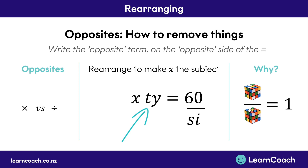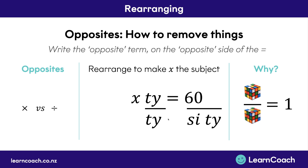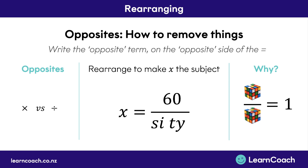The exact same thing holds true for TY. X is times TY on the left-hand side, so we put divided by TY — the opposite term — on the opposite side of the equals sign, on the right-hand side. That works because TY divided by TY, like anything divided by itself, equals 1, which we don't need to write out so it cancels. All we're left with is X equals 60 divided by SI times TY, or more neatly, X equals 60 over SITY. That is how you remove things.